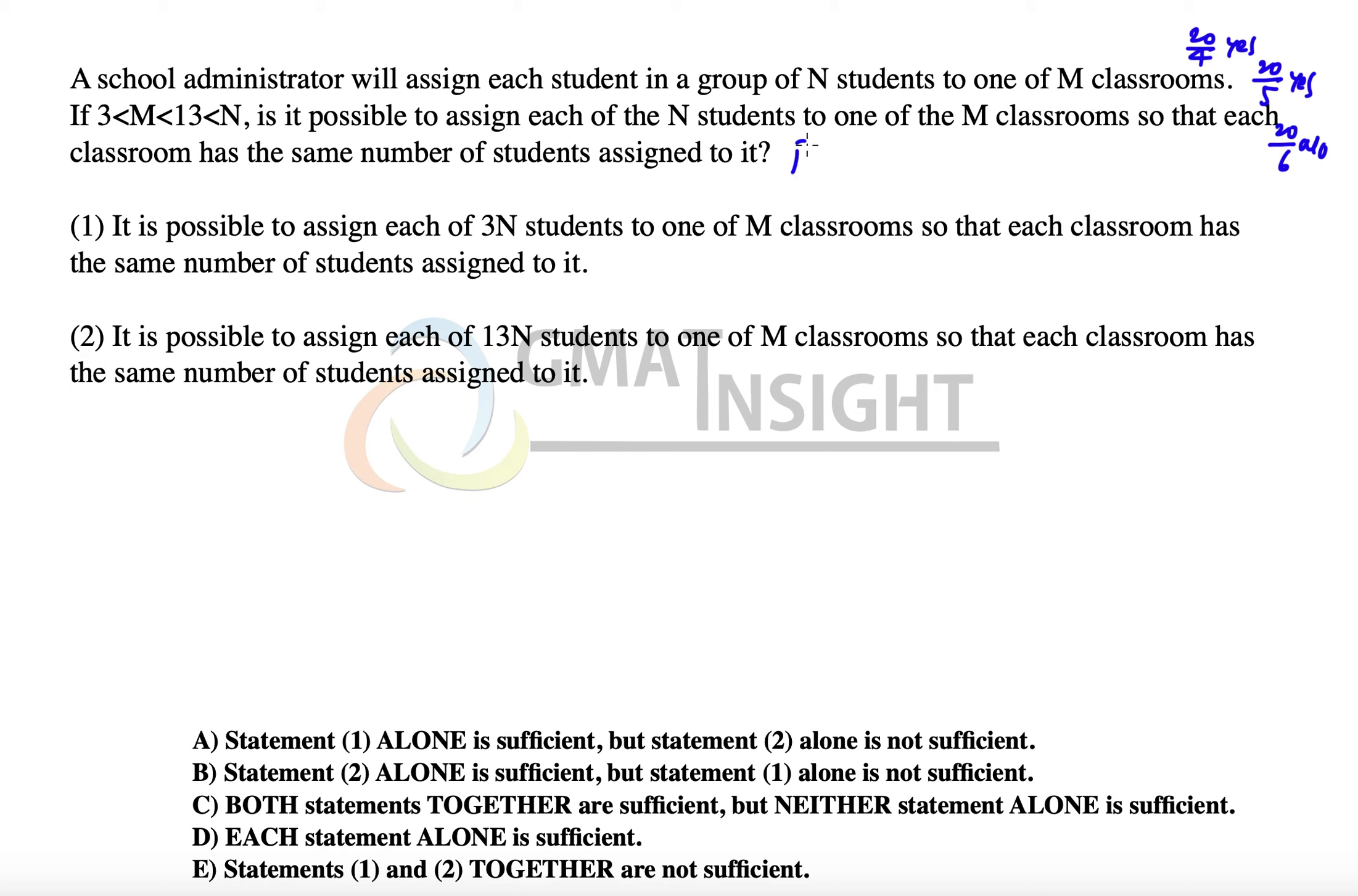So the question is only asking: is N over M an integer or not? Because if it's an integer then the answer will be yes. If it's not an integer the answer will be no because the students cannot be equally assigned to M classrooms in that case.